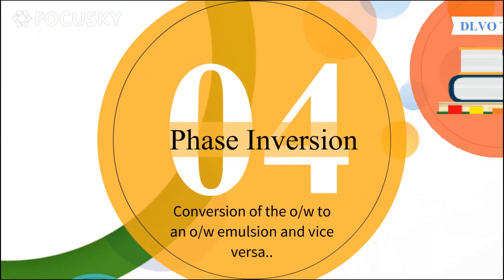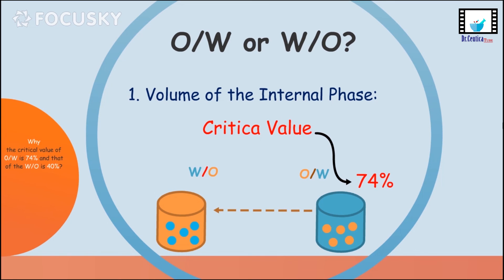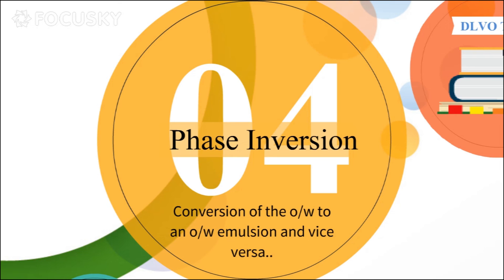The last issue with emulsion stability is phase inversion. When we talked about types of emulsions, we mentioned a term called critical value, which refers to the percentage of both phases in the two types of emulsions. Simply, if the critical value is exceeded in either type of emulsion, we might experience inversion to the other type. To really digest this, watch the previous video — the link is in the description box.